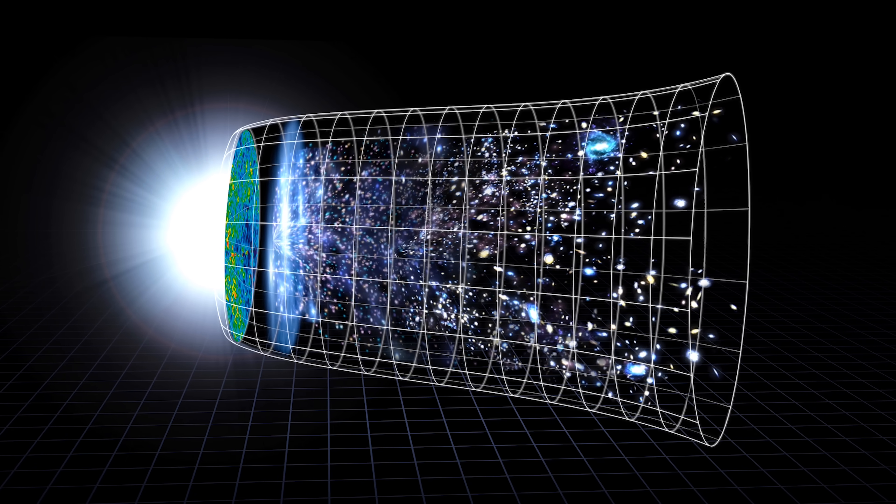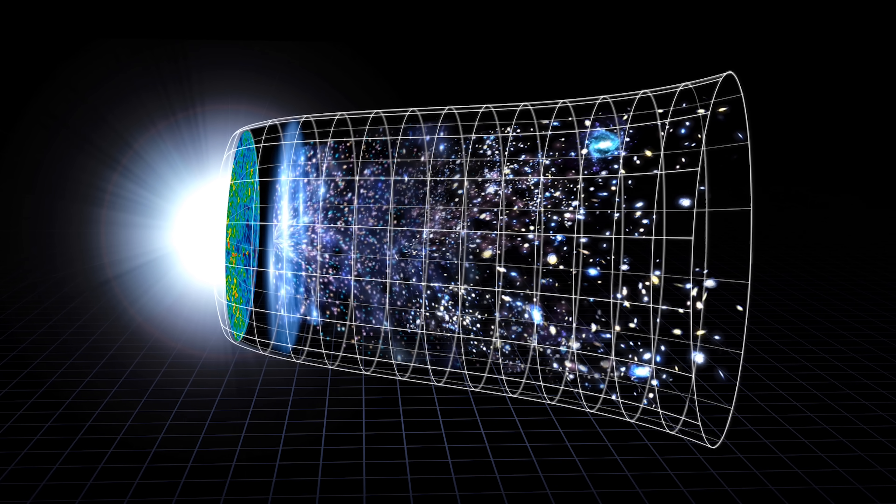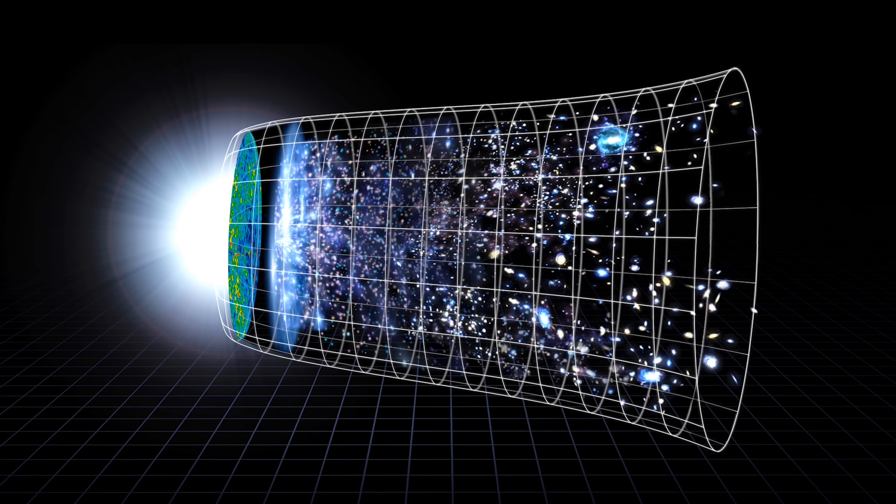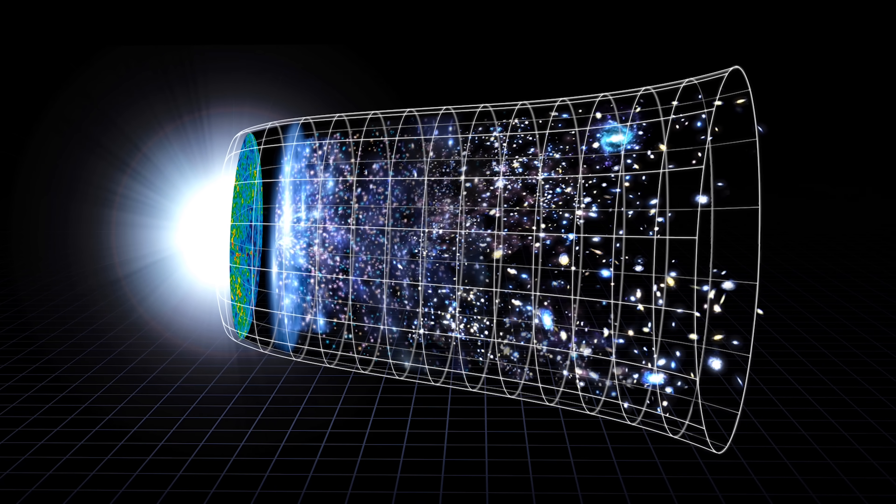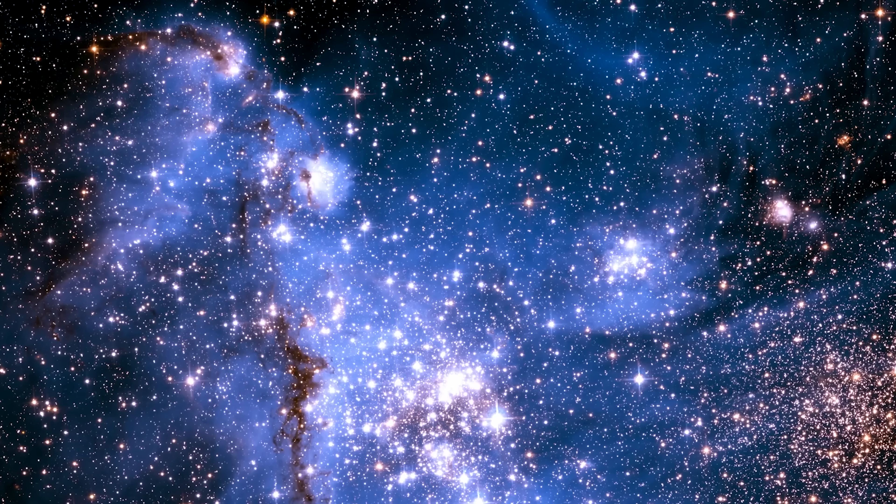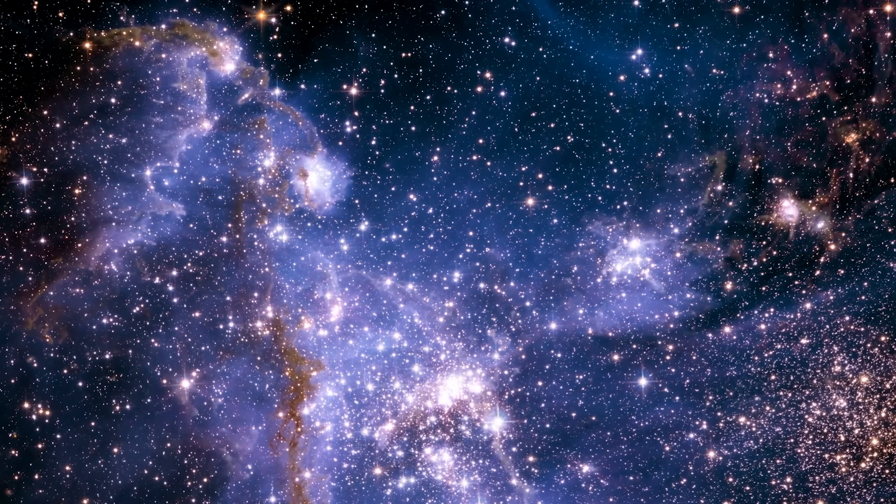So where does this leave us? If Gupta's model holds, and the universe truly is 26.7 billion years old, then everything, from the birth of galaxies to the creation of elements, has had twice as much time to evolve. The impossible galaxies Webb found aren't impossible at all. They're simply older than our equations allowed.